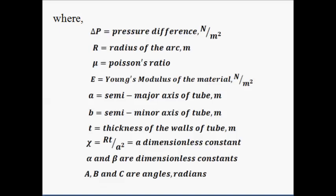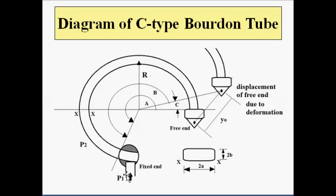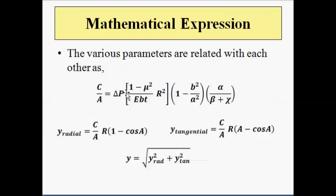To summarize the working: the fixed end of the C-type Bourdon tube is kept on a rigid base connected to the source of pressure to be measured. Whenever there is a change in pressure — when outside pressure differs from inside pressure — the tube undergoes deformation, causing displacement of the free end. This displacement Y-subscript-O can be related to the differential pressure and the coiling angles A, B, and their difference C using the mathematical expressions, allowing calculation of radial, tangential, and net displacement.